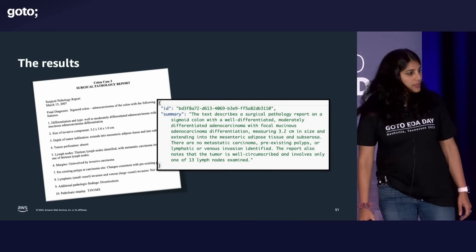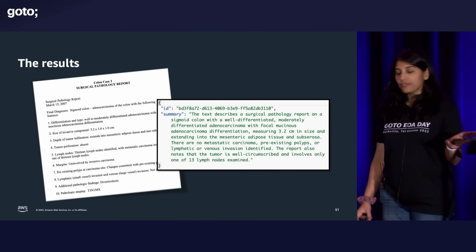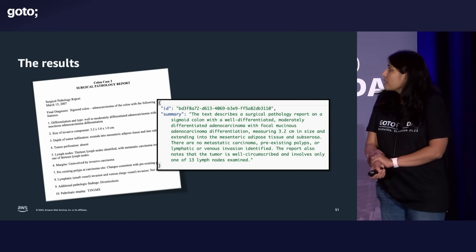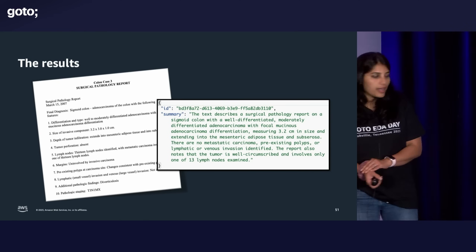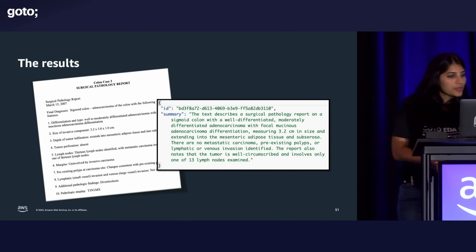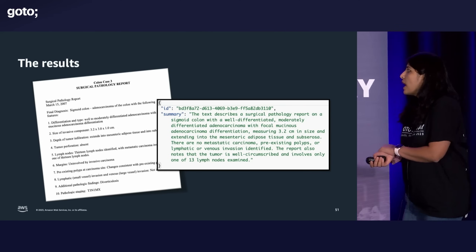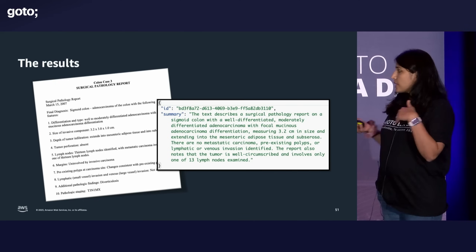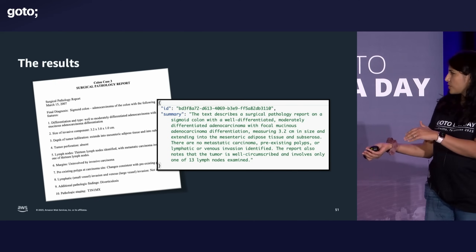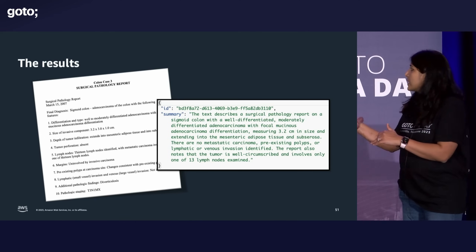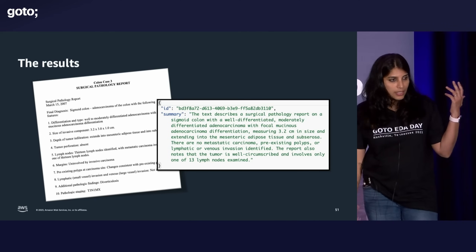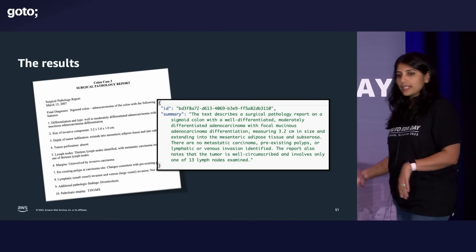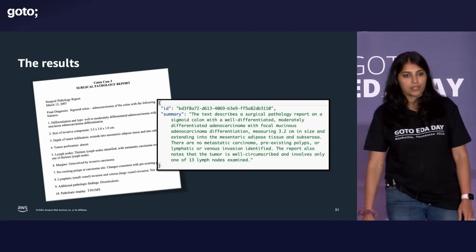Here are the results. We actually created this application and ran a surgical pathology report — extracted the text using Textract, then took all of the extracted text and sent it to a large language model hosted in SageMaker, and that was the summary it gave us. This is the summary I'm going to be storing in the database and using for my downstream applications.